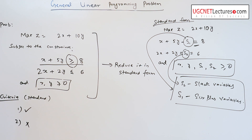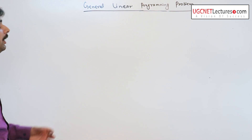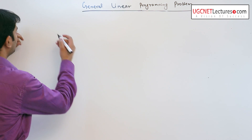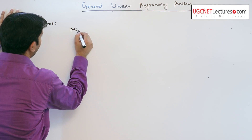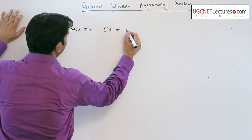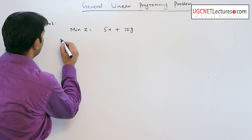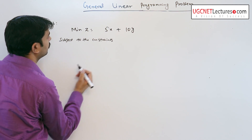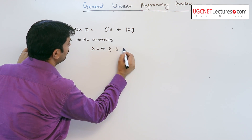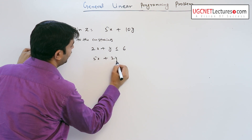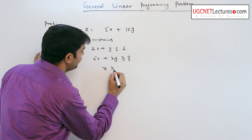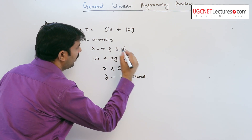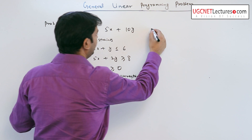Now, if the general linear programming problem is of minimization type, how do we reduce it to standard form? Consider the problem: minimization of z, subject to the constraints 2x plus y is less than or equal to 6, 5x plus 2y is greater than or equal to 8, x is non-negative, and y is unrestricted.